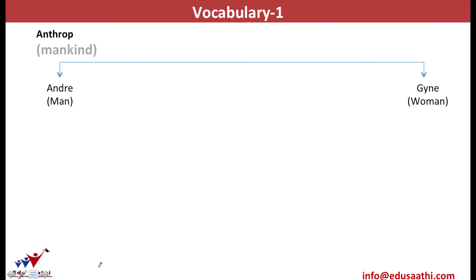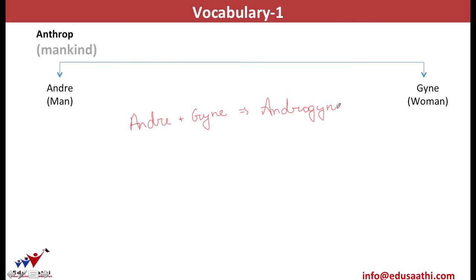Can you think about a word which means a woman who behaves like a man? Since here we'll have to use men as a reference, we'll place 'andri' in front of 'gynec.' And the word that we get is androgyny, which means a woman who behaves like a man.